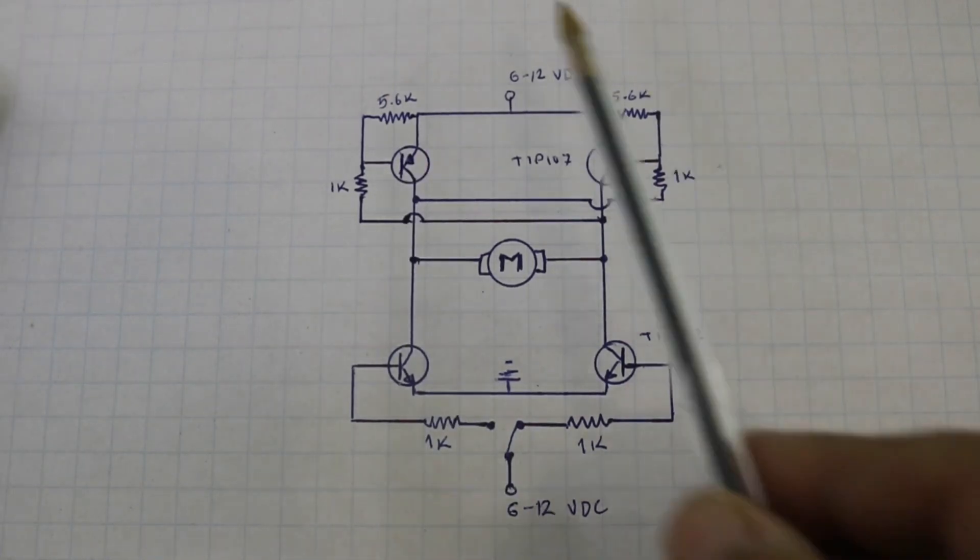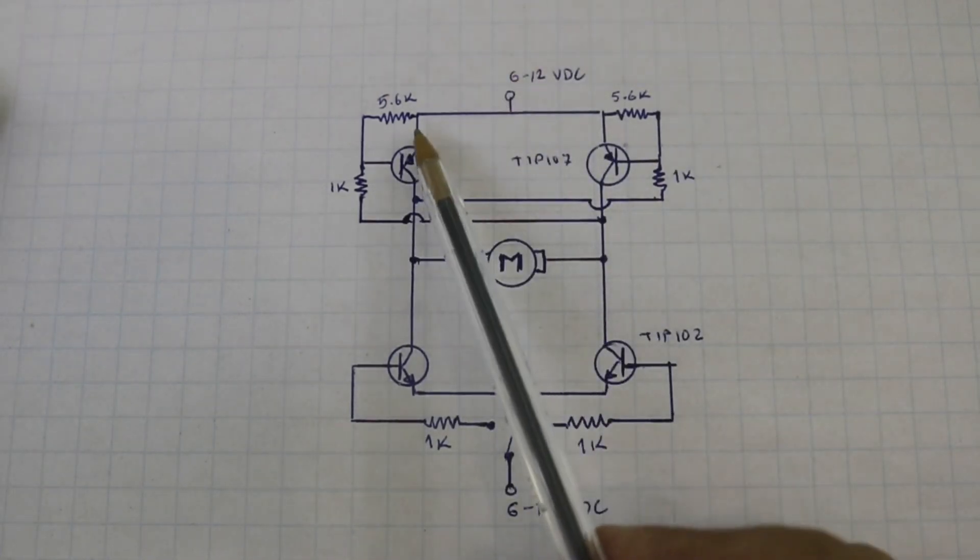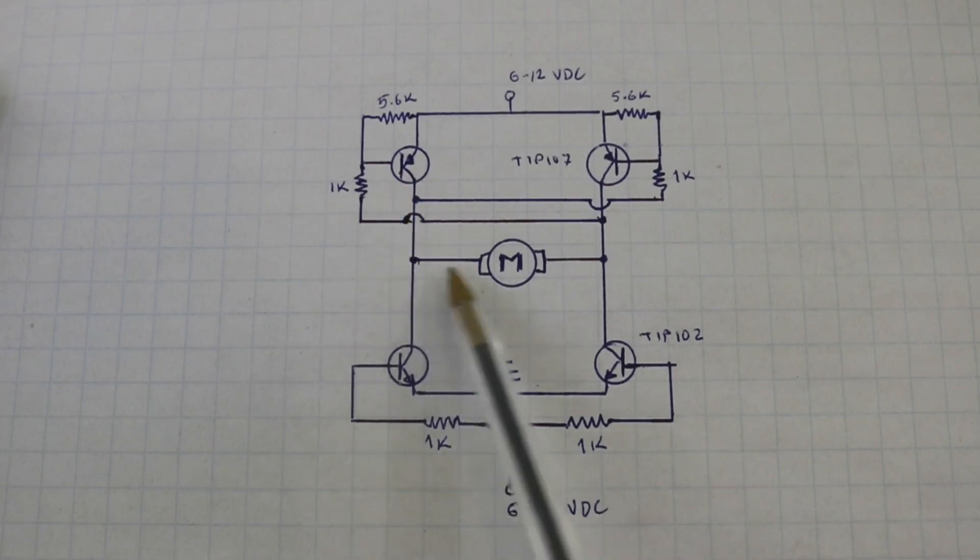So the current can flow from here through this transistor through the motor making it rotate and to ground.